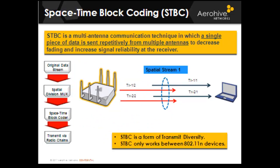Space-time block coding is a method where the same information is transmitted on two or more antennas — a type of transmit diversity. Sending multiple copies of the same signal on multiple antennas does not increase the data rate, but it does increase the receiver's ability to detect signals at a lower signal-to-noise ratio, improving received sensitivity. Space-time block coding and cyclic shift diversity are both transmit diversity techniques sending the same data out of multiple antennas. Space-time block coding communication is possible only between 802.11n devices, while cyclic shift diversity signals can be received by either 802.11n capable devices or by legacy 802.11 devices.